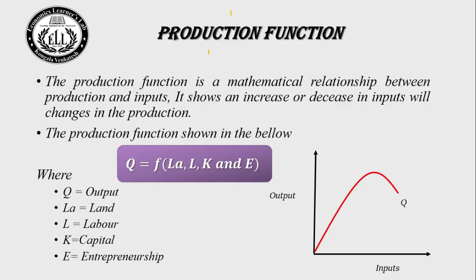The production function is a mathematical relationship between production and inputs. It shows how an increase or decrease in inputs changes production. The production function is written as Q = f(La, L, K, E), where Q equals output, La equals land, L equals labor, K equals capital, and E equals entrepreneurship.